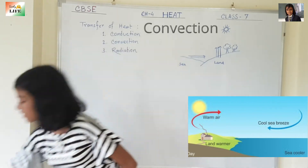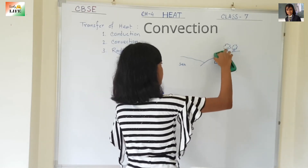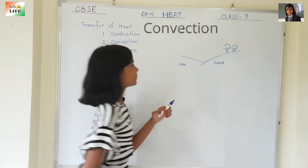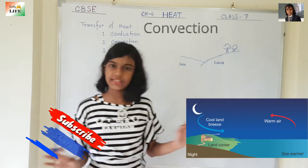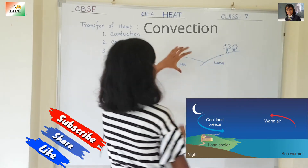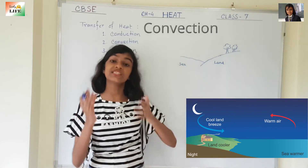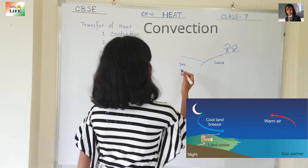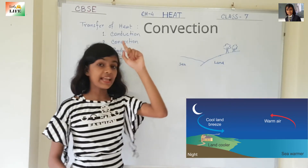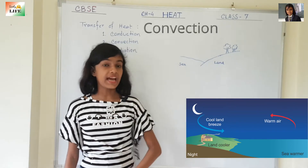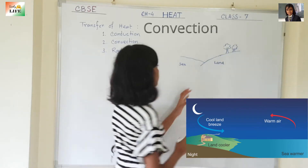Now, what happens in nighttime? There is no sun at night, so the air over the sea and the air over the land both get cooled. The air over the land gets cooled faster than the air over the sea — just as in daytime the air over the land gets heated faster, in nighttime it also gets cooled faster.